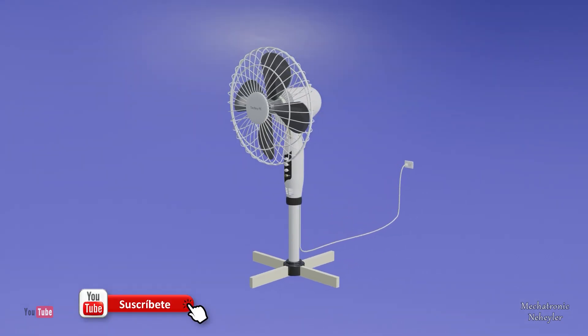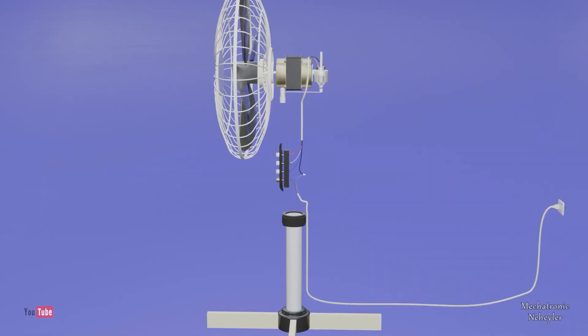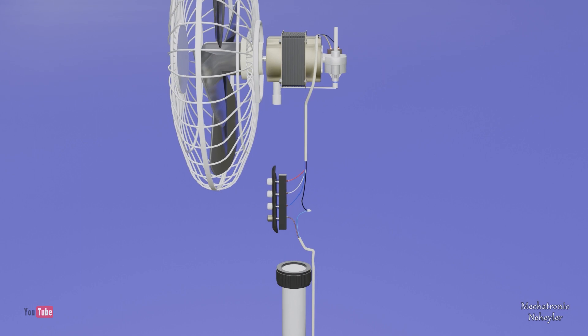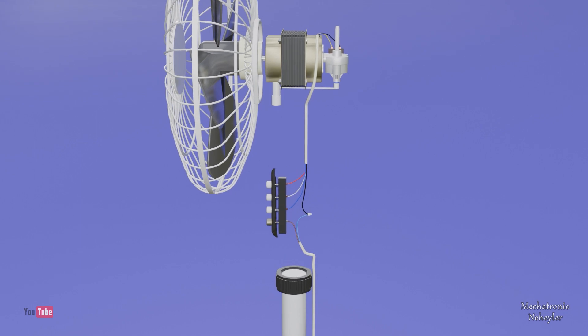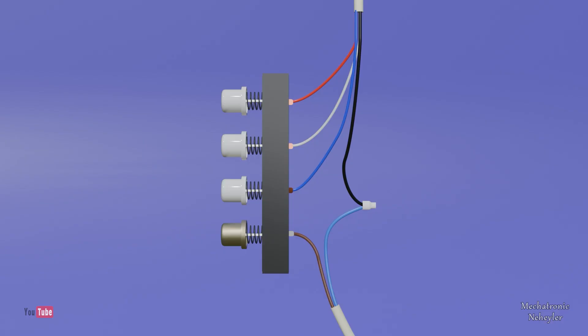Every fan has a speed selector which consists of buttons and push buttons that are connected to the electric motor. Generally in this type of fans, five cables come out of the motor box, two of which are connected to a capacitor.